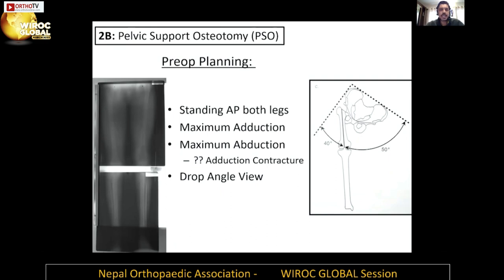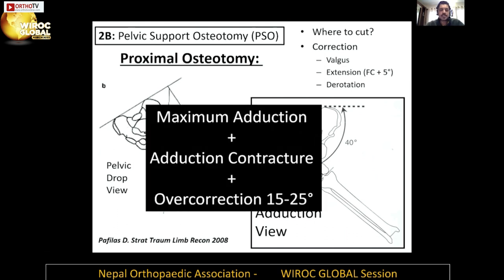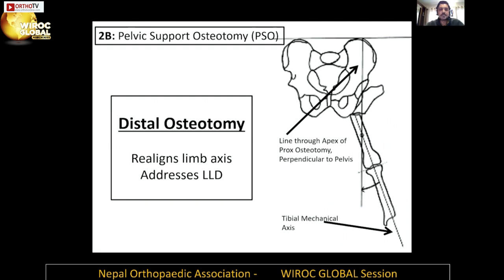Planning involves getting a maximum adduction view and seeing how much abduction is possible — a drop angle view is taken in maximum adduction. Scanograms are very useful. The proximal osteotomy lies at the level of the proximal femur that hits the ischium in maximum adduction of the extremity. We also have to account for an adduction contracture and aim for over-correction of 15 to 25 degrees to account for remodeling, which is very common in children. The distal osteotomy realigns the limb axis and is used for lengthening.